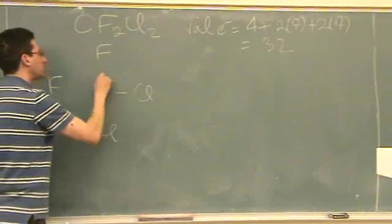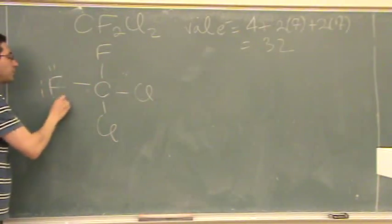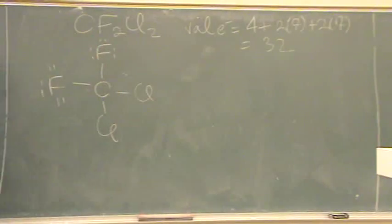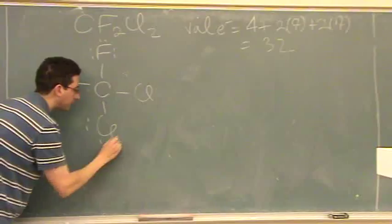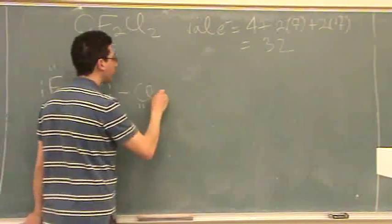F... So, 2, 4, 6, 8 of 32. 10, 12, 14. 16, 18, 20. 22, 24, 26. And then 28, 30, 32.